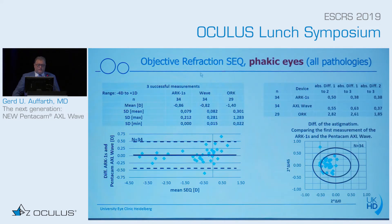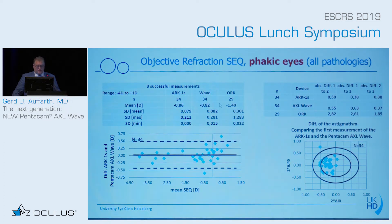When we look at the objective refraction — the spherical equivalent of the phakic eyes — including all patients, we have more or less identical values between the NIDEK and the Pentacam device, with a mean value of around 0.8 to 0.9 diopters. Interestingly, the Schwind device showed something quite different here. But we had very good agreement between the NIDEK and the Pentacam devices.